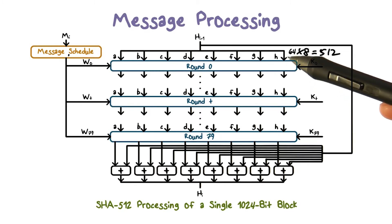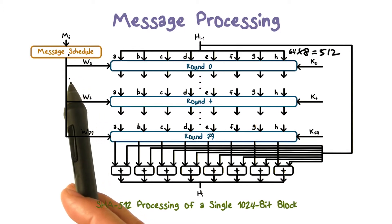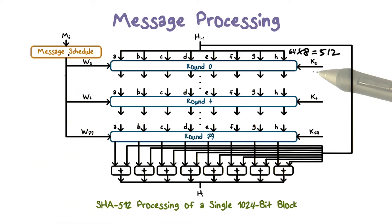At each round, the inputs include the result from the previous round, some constant K, and some words derived from the current message block. The constants here provide randomized values. And the purpose is to eliminate any regularities with the input data. The operations at each round include circular shifts and primitive boolean functions based on AND, OR, NOT, and XOR.